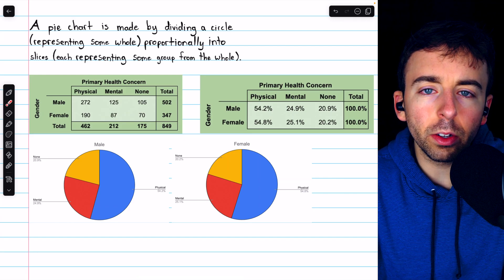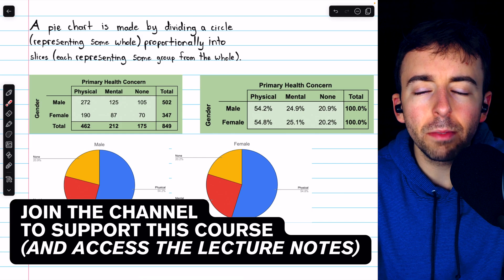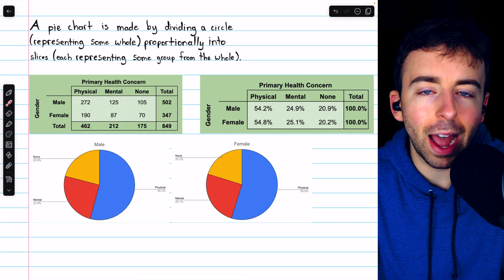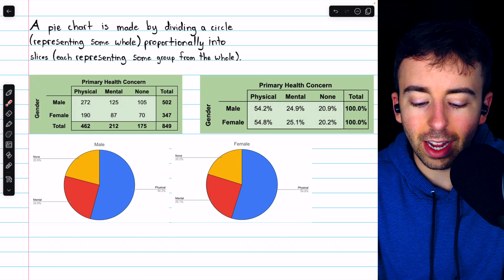We previously discussed categorical variables and how the distribution of a categorical variable can be displayed in what's called a pie chart. I'll leave links in the description to the videos where we introduce these things.